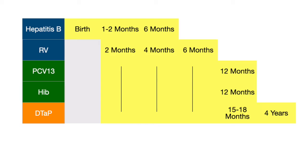Diphtheria is caused by Corynebacterium diphtheriae and can lead to a pharyngitis and lymphadenopathy type picture. Tetanus is your classic lockjaw spastic paralysis disease, and pertussis is known as whooping cough. These vaccines are given at two, four, and six months of age, as well as at 15 to 18 months of age. There is also a fifth dose at four years of age.